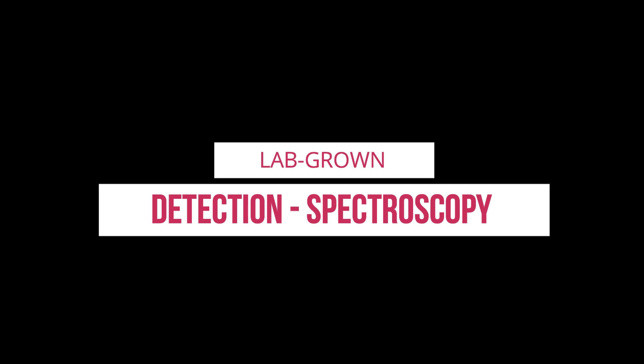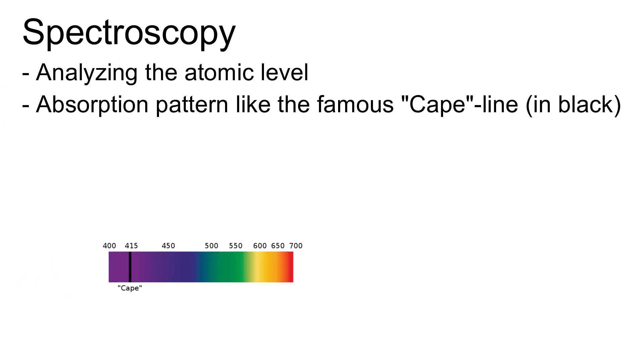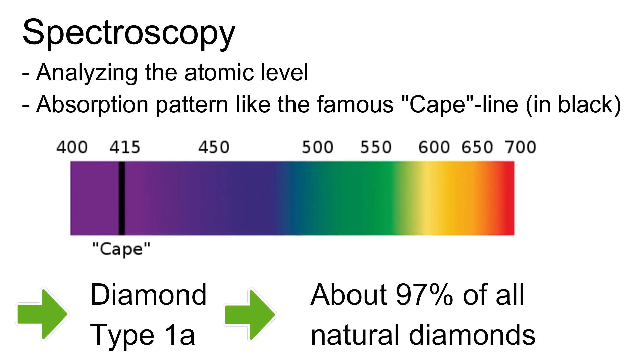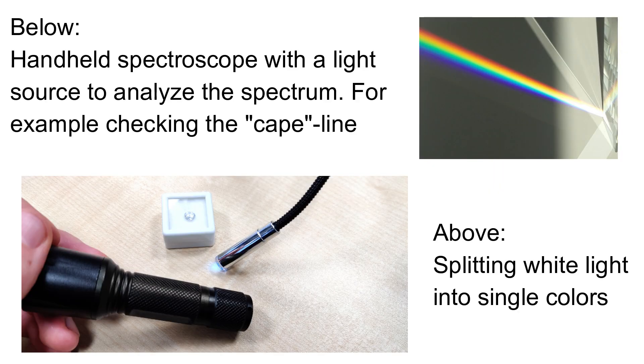Diamond type can easily be determined using spectroscopy because the individual constellations in the atomic layer produce certain absorption patterns. The famous cape line at 415 nanometers forms due to nitrogen aggregates and is a good example of how spectroscopy works. But how does all this knowledge on diamond types help us spot synthetic diamonds?